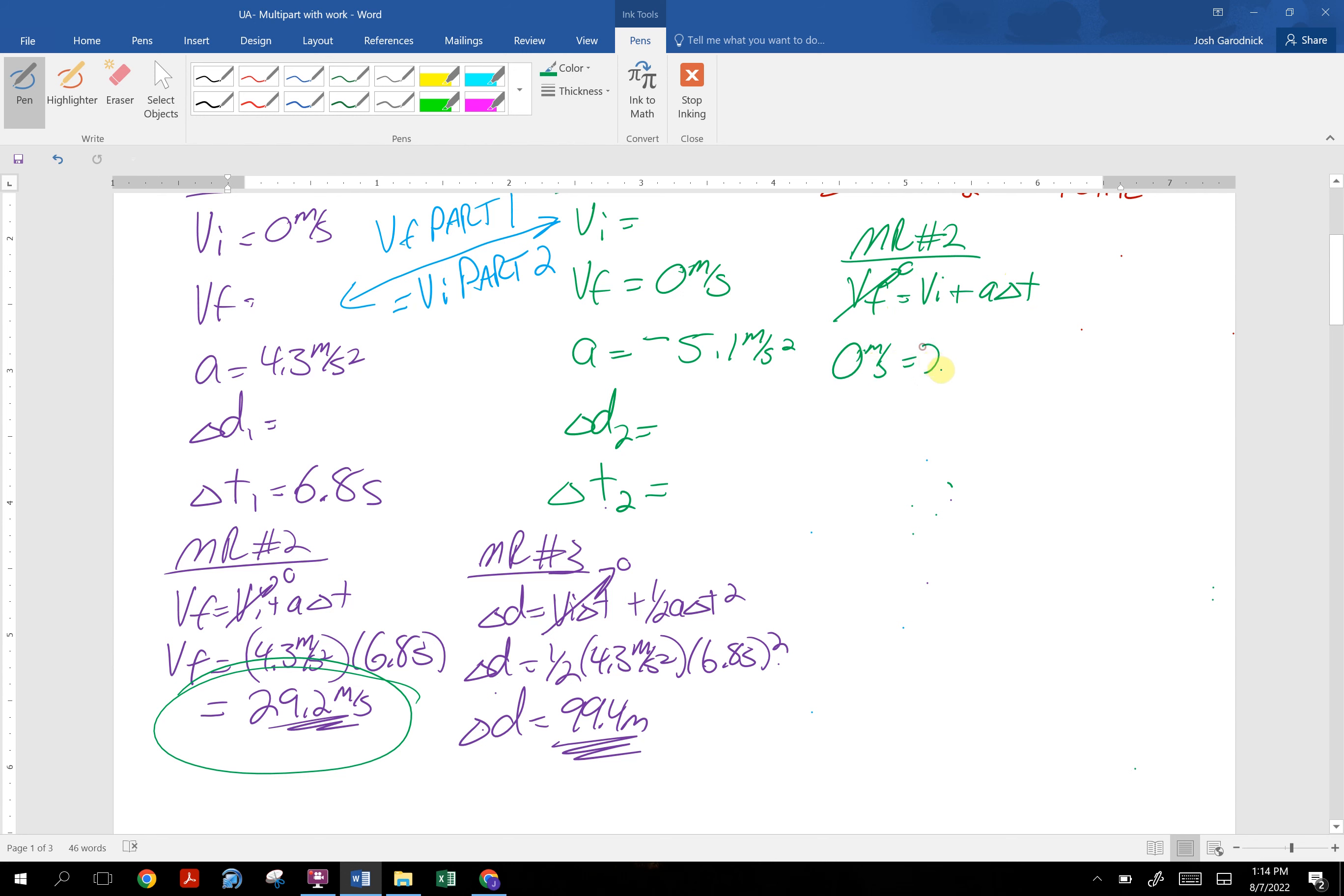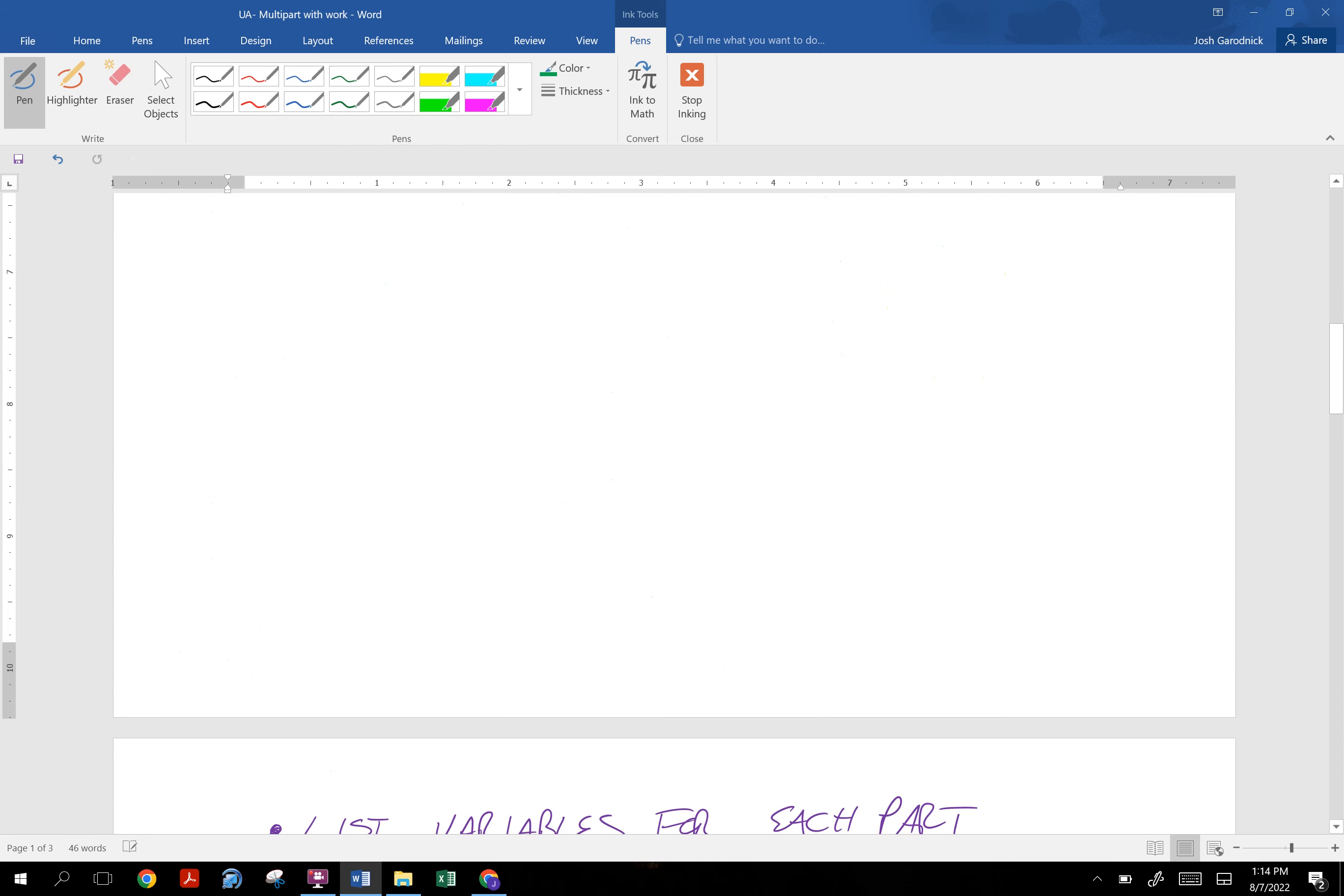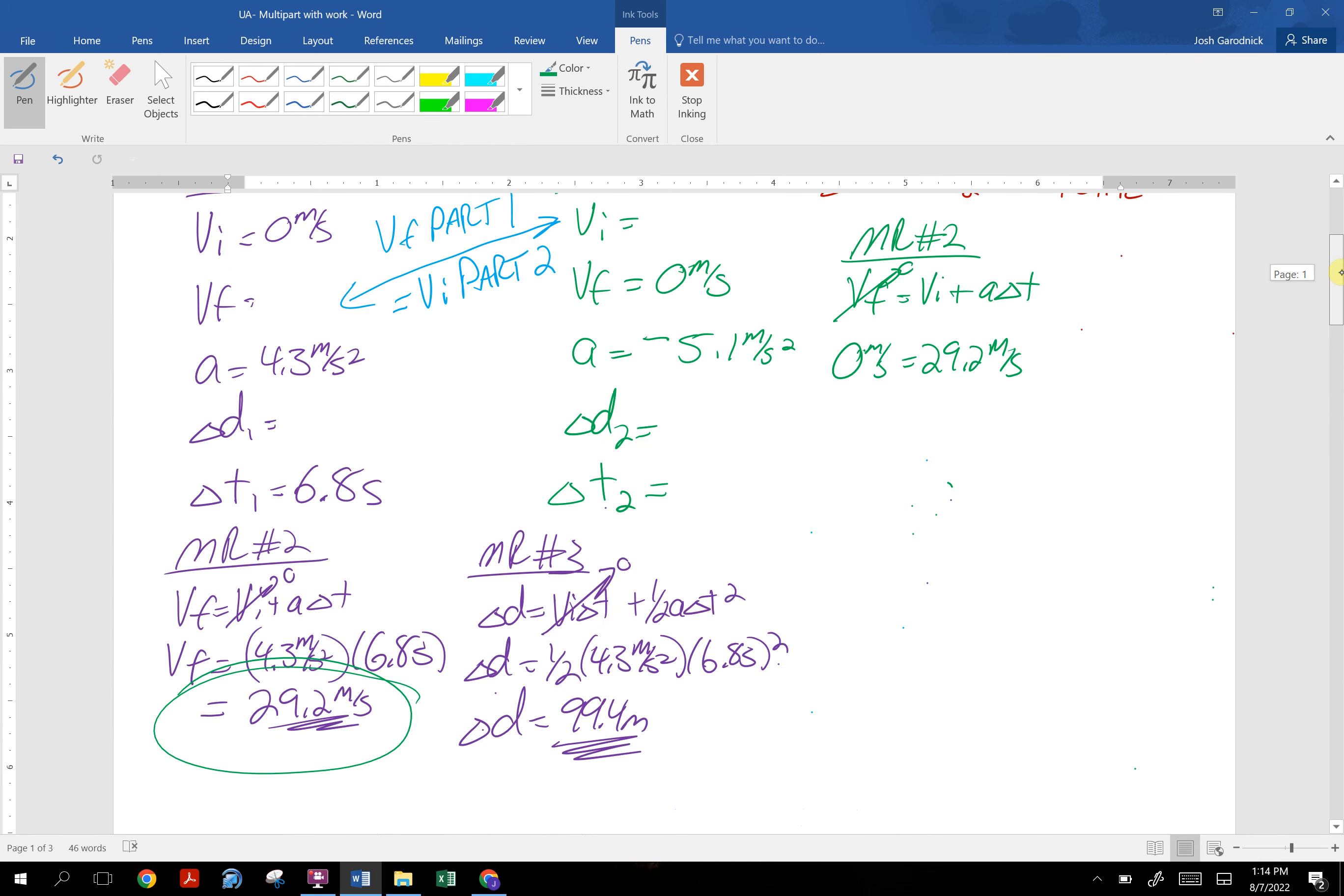Initial velocity is the final from the previous part, 29.2 meters per second, plus acceleration times time. And our acceleration for part two is negative 5.1 meters per second squared times time. And we get a time to slow down of 5.72 seconds.